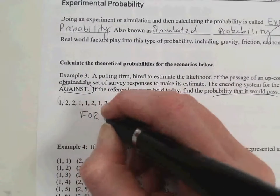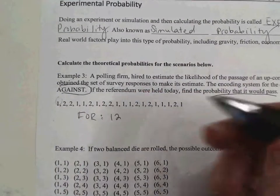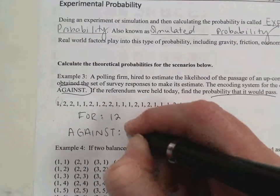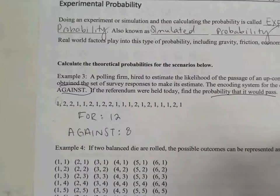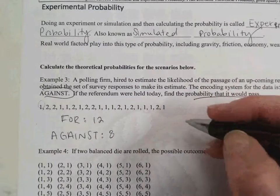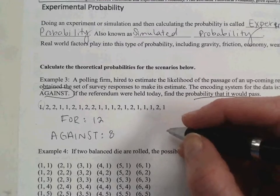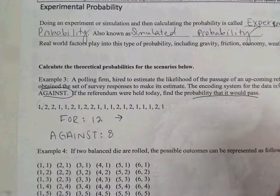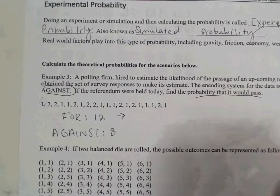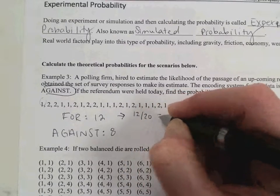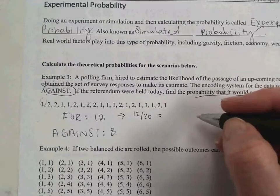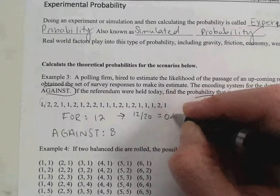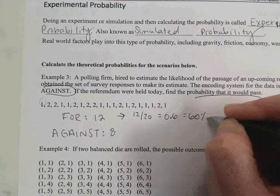How many were against? So that means there were 12... How many total voters here? 20. So that means the probability that it would pass would be 12 out of 20. We can write that as a decimal. 12 out of 20 would be 0.6 or 60%.